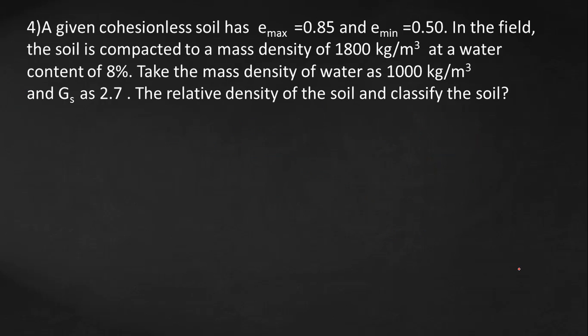It is given that emax equals 0.85 and emin equals 0.5. If we find e, then we can find Rd. What is bulk density? It is G times gamma-w by 1 plus e, multiplied by 1 plus water content.